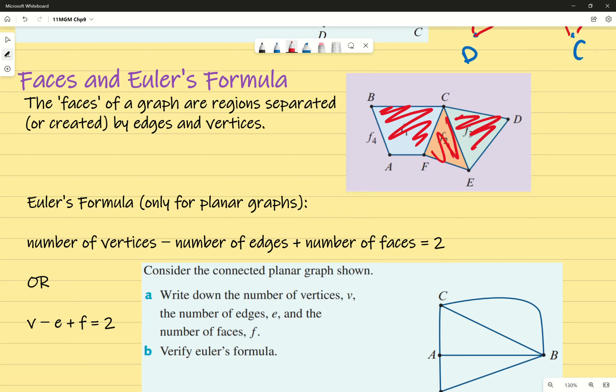We can use that property to figure out some basic stuff without drawing out the graph. If we know the number of vertices and edges, we can determine the number of faces. We just need two bits of information to find the third.